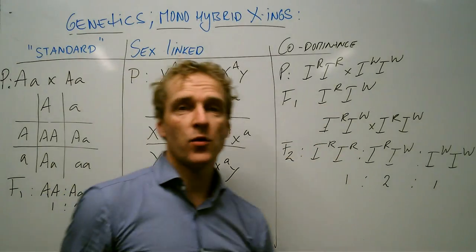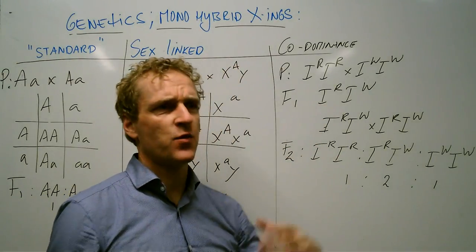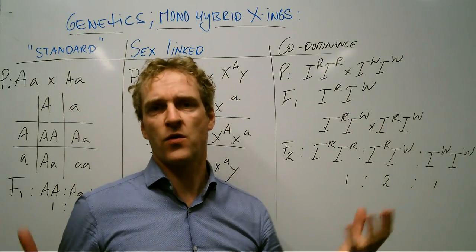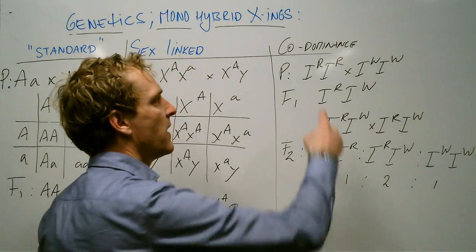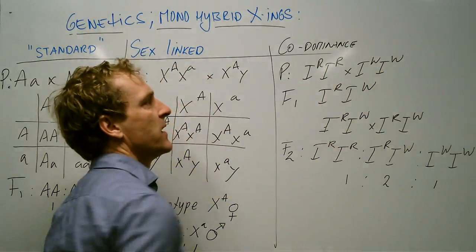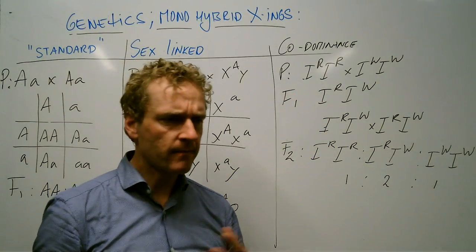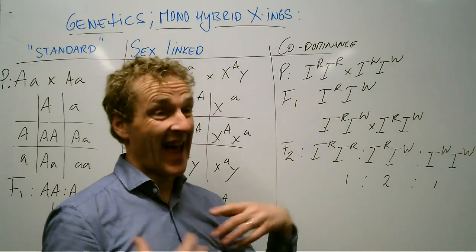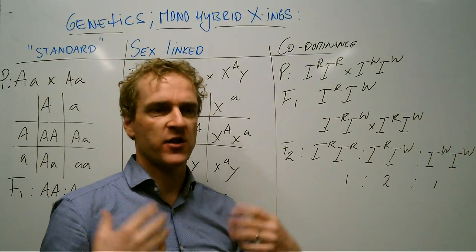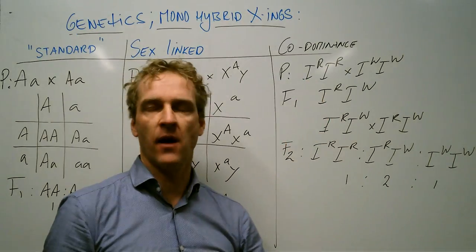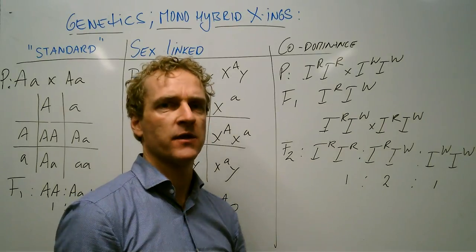Last one, co-dominance. Co-dominance is when there's no dominant or recessive allele and I like to write that down in this way, so I have the I of intermediate and that's helpful for me when I write these questions down so I see oh this is a co-dominant question.